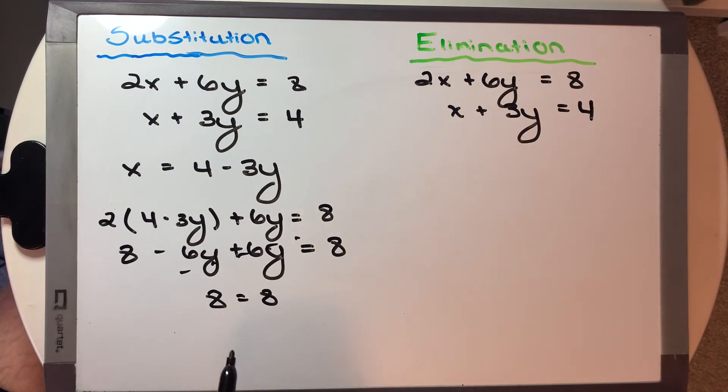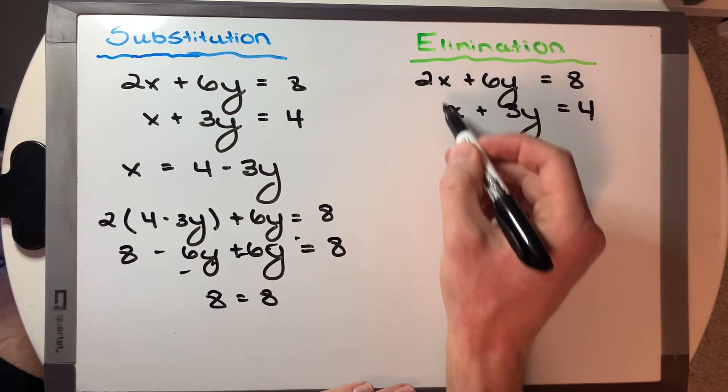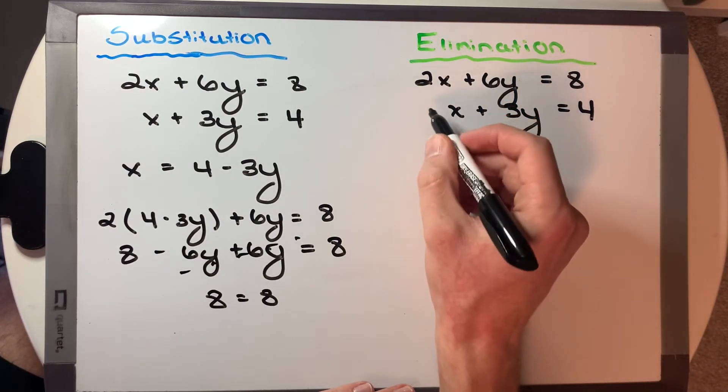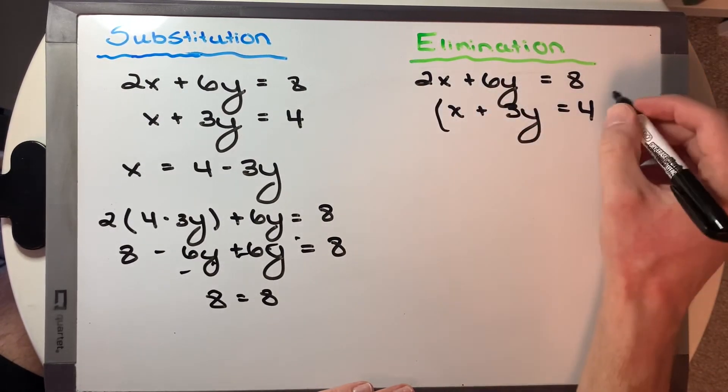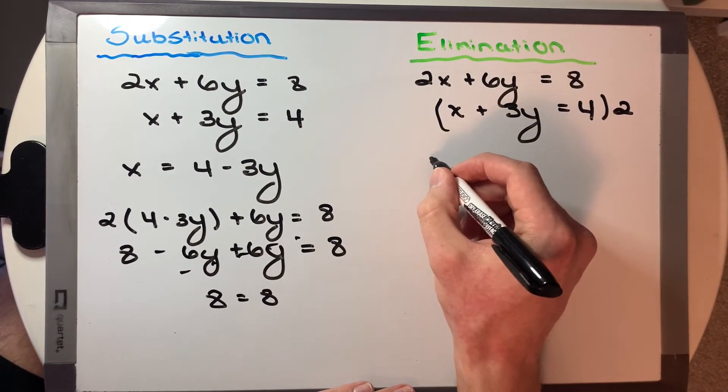Let's confirm that we get infinite solutions using our elimination method. So like we said before, we want to figure out a way to cancel out the x's or cancel out the y's. In this case, it looks simplest to multiply the second equation by 2, which will allow us to cancel those x's. So rewriting both equations,